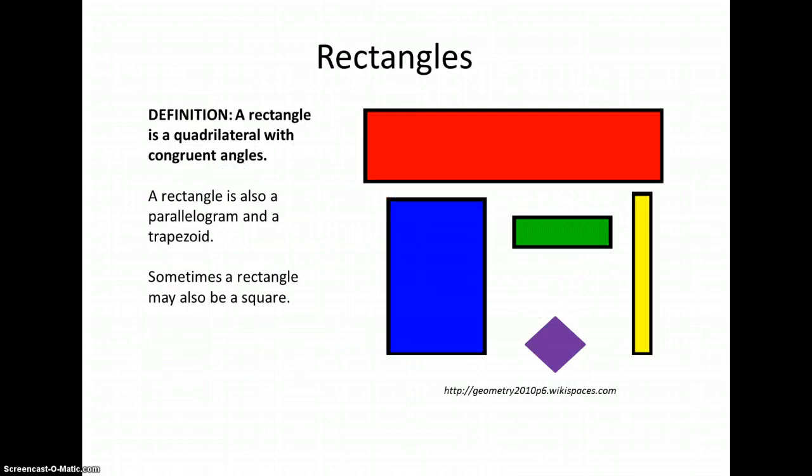A rectangle is a quadrilateral with congruent angles. For a rectangle, we don't really put any limits on the sides. They can be any length. What we put a limit on are the angles. All four must be the same.